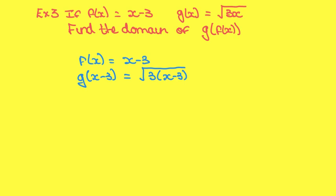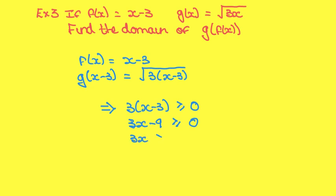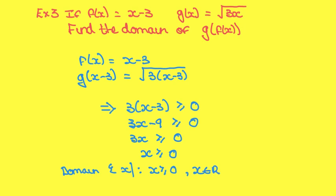Now we want to find the domain. The domain is the input. Because we have a square root, inside the square root must be greater than or equal to 0 — we cannot find the square root of a negative number. Therefore, 3 times (x minus 3) must be greater than or equal to 0, so 3x minus 9 must be greater than or equal to 0, so x must be greater than or equal to 3. The domain is x belongs to any real numbers where x is greater than or equal to 3.